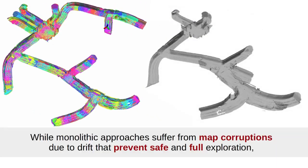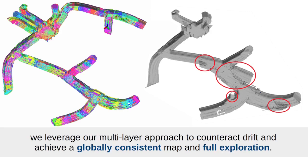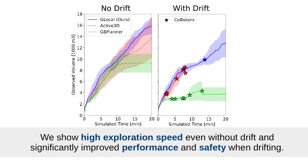While monolithic approaches suffer from map corruptions due to drift that prevents safe and full exploration, we leverage our multi-layer approach to counteract drift and achieve a globally consistent map and full exploration. We show high exploration speed even without drift and significantly improved performance and safety when drifting.